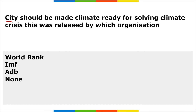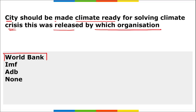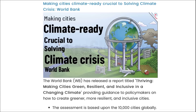Next: cities should be made climate-ready to solve the climate crisis. This data was released by which organization? It is the World Bank, which released a report titled 'Thriving: Making Cities Green, Resilient and Inclusive in Changing Climate.' The report says that to fight climate change, cities need to be more advanced and aligned with sustainable development goals.